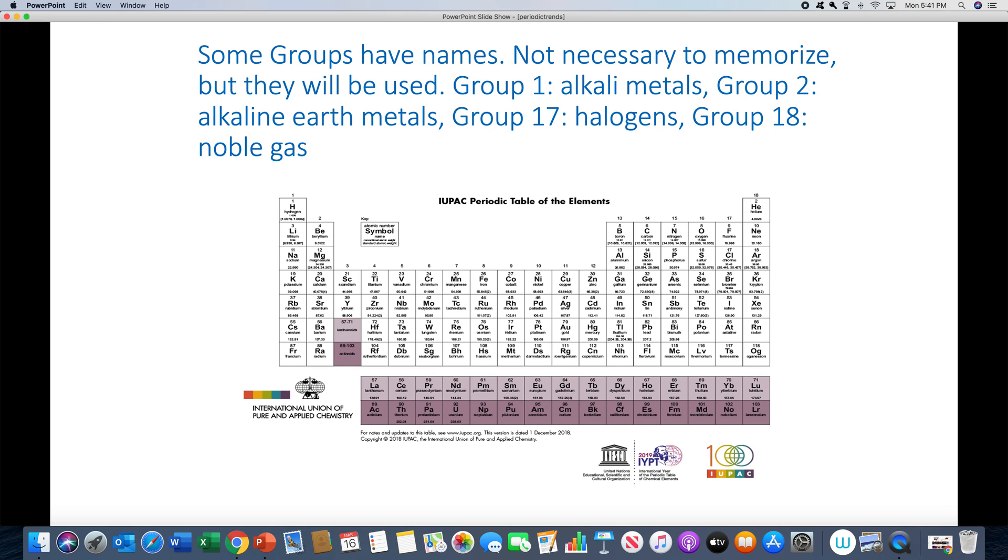Some of the groups have names. I don't care if you memorize the names from my class, meaning I won't test you on the names, but I'm going to use the names so it's very handy if you're familiar with them. So first column, group one is referred to as the alkali metals. Group two is referred to as the alkaline earth metals - that would be beryllium, magnesium, calcium. Group 17, so I'm using the newer nomenclature, that's called the halogens - that's fluorine, chlorine, bromine, iodine. Group 18 are the noble gases, which are extremely unreactive - that's helium, neon, argon, krypton, and so on.